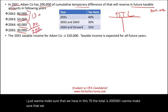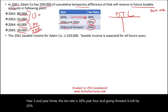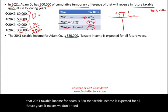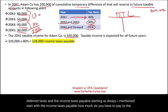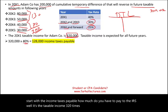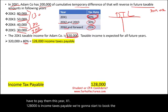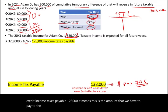The current tax rate is 40%. Year two and year three, the tax rate is 30%. Year four and going forward, it will be 25%. The 20X1 taxable income for Adam is $320,000, and taxable income is expected for all future years — meaning we don't need an allowance account. We start with income taxes payable: $320,000 times the current tax rate of 40% equals $128,000. We credit income taxes payable for $128,000 — this is the amount we have to pay to the IRS and represents the current income tax expense.